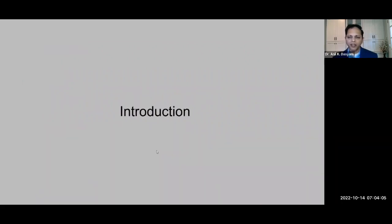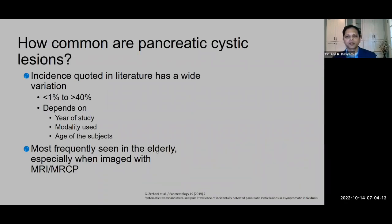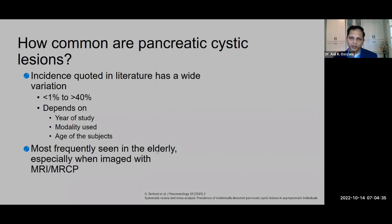What are pancreatic cystic lesions, how common are they, and why should we care for them? Pancreatic cystic lesions are either true cystic lesions or lesions that have a cystic component within them, and they are fairly common. The incidence quoted in the literature is very variable. Older literature, where MR was not used, quotes incidence as low as less than one percent, but the most recent publications, especially those using MR, report a very high prevalence exceeding 40 percent in some studies.